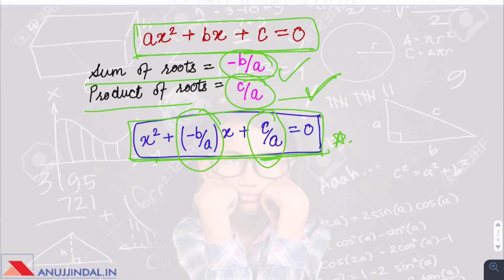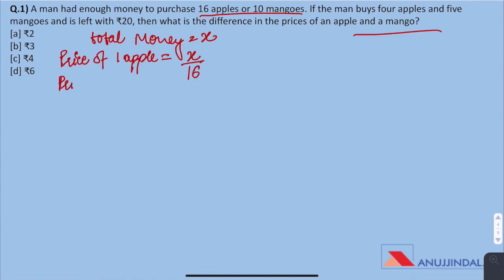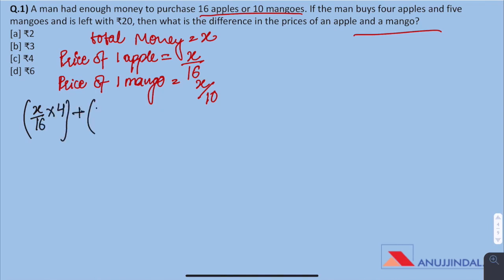Question 1: A man had enough money to purchase 16 apples or 10 mangoes. If the man buys 4 apples and 5 mangoes and is left with Rs 20, what is the difference in the prices of an apple and a mango? Let the amount of money he has be x. Then price of 1 apple is x by 16 and price of 1 mango is x by 10. The man buys 4 apples (x/16 × 4) plus 5 mangoes (x/10 × 5), which gives x/4 plus x/2, coming out to be 3x/4.